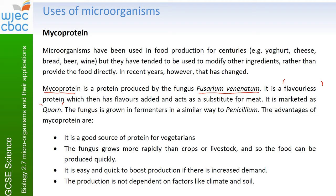The advantages of mycoprotein: it's a very good source of protein for vegetarians or even non-vegetarians. Fungus grows more rapidly than crops or livestock, so the food can be produced quickly. Some people argue it might actually take the place of meat, making food production more efficient. It's quick and easy to boost production if there's increased demand — you just make more of it. And production is not dependent on factors like climate and soil, so as long as you have a bioreactor, you can grow it anywhere.